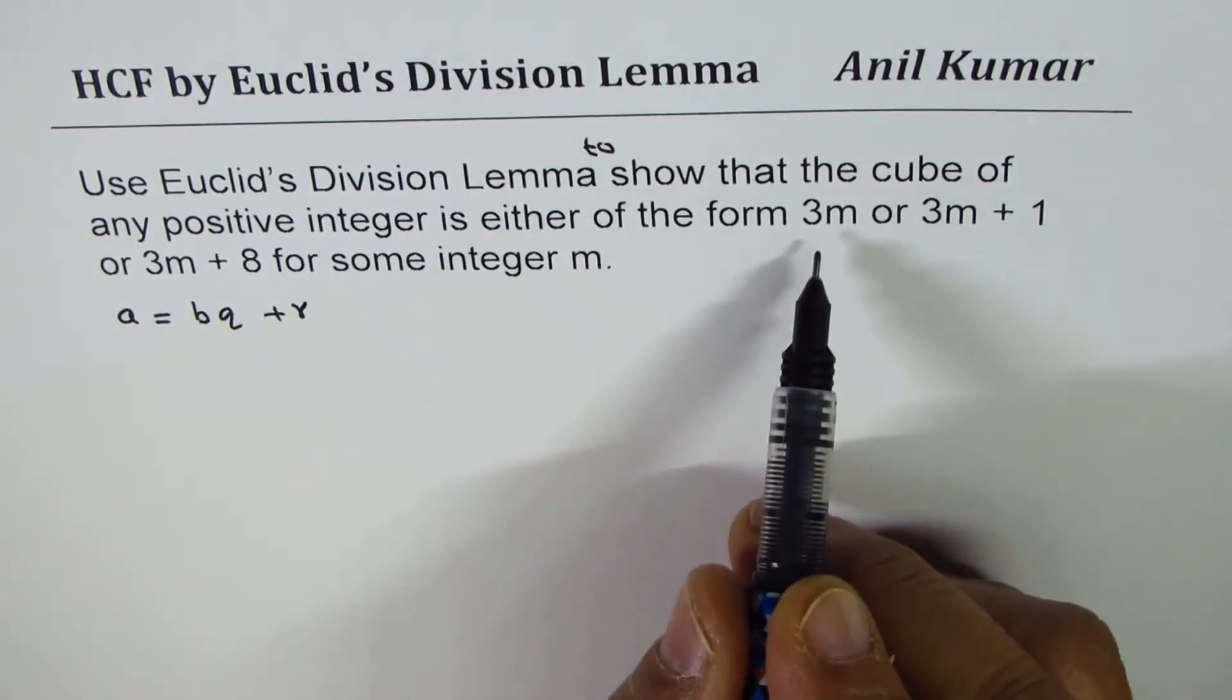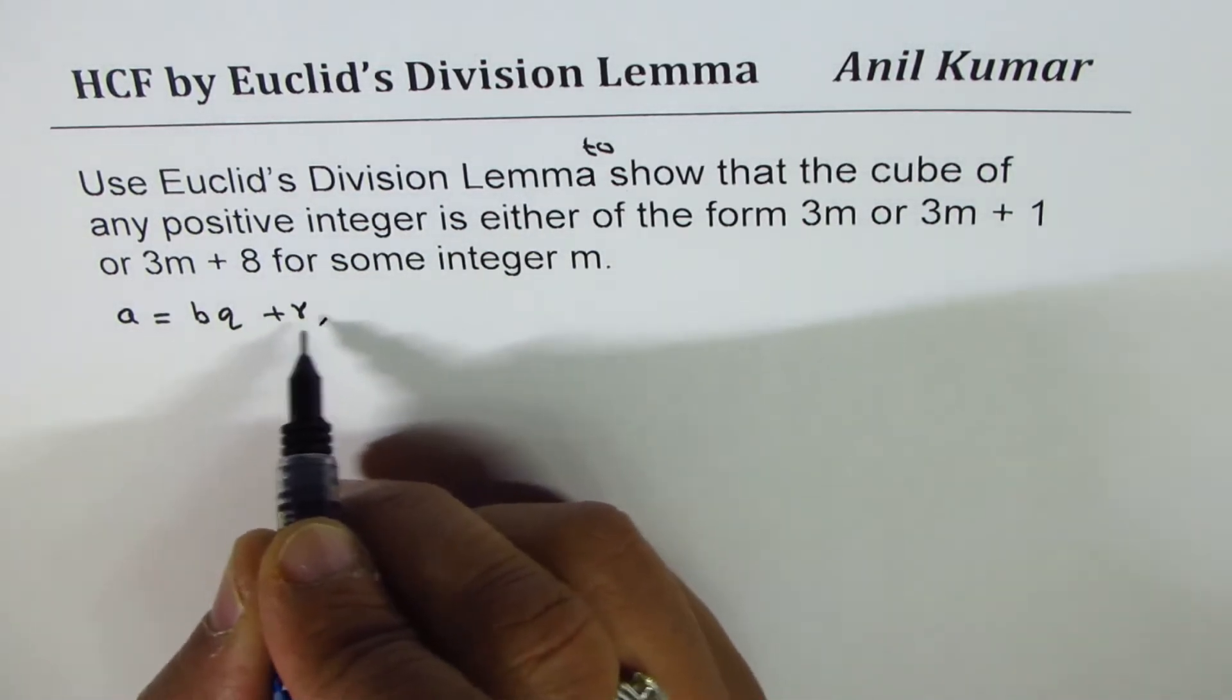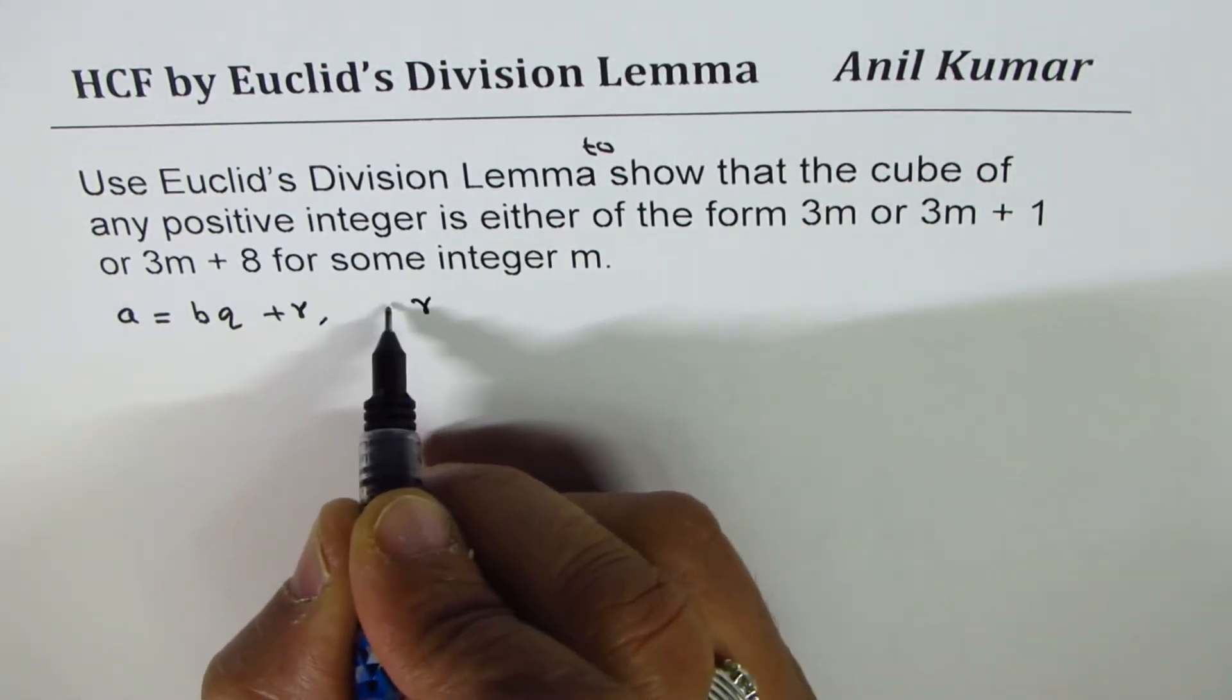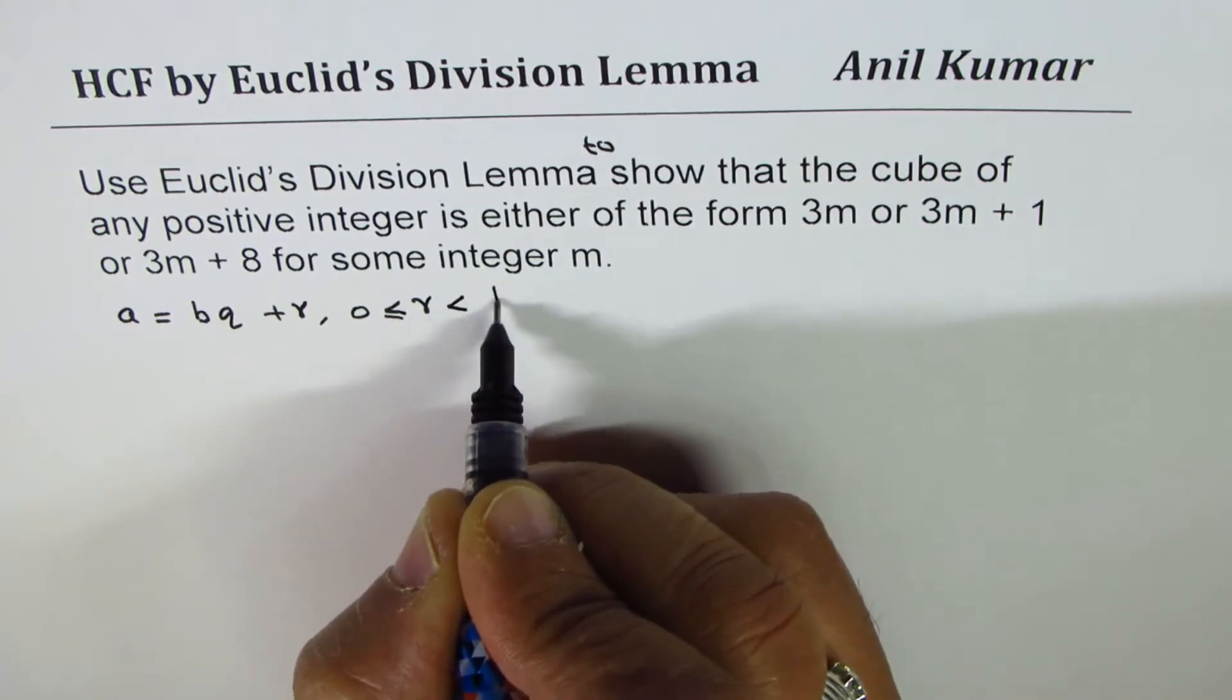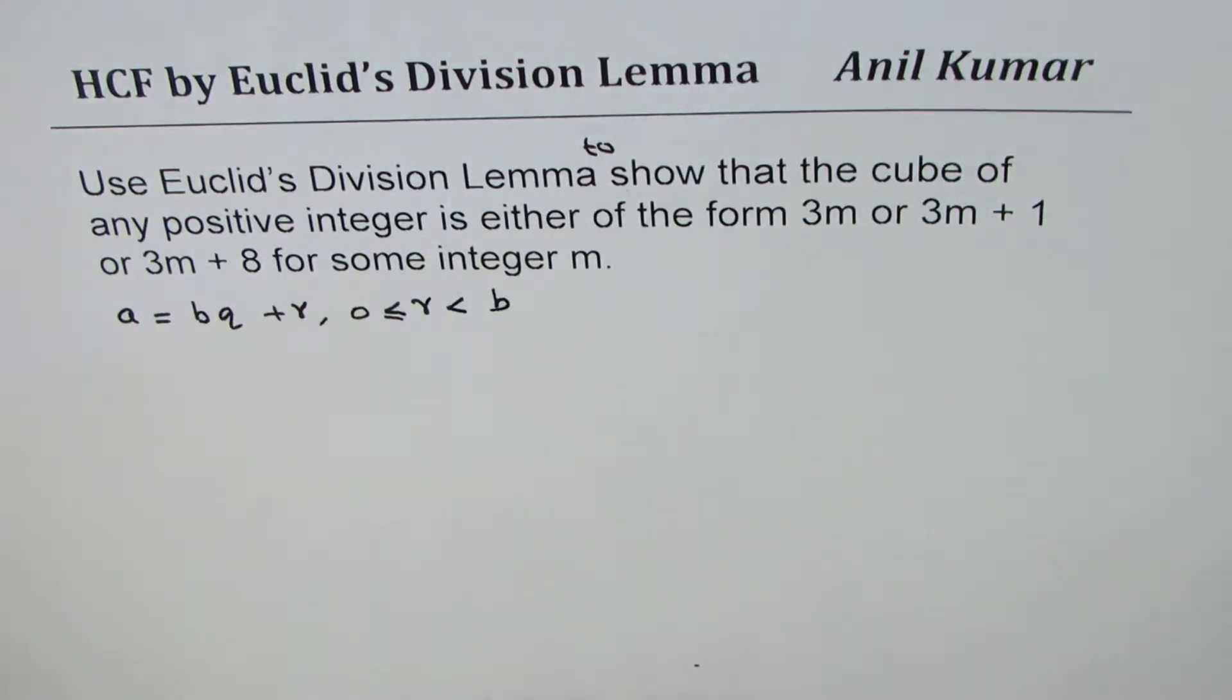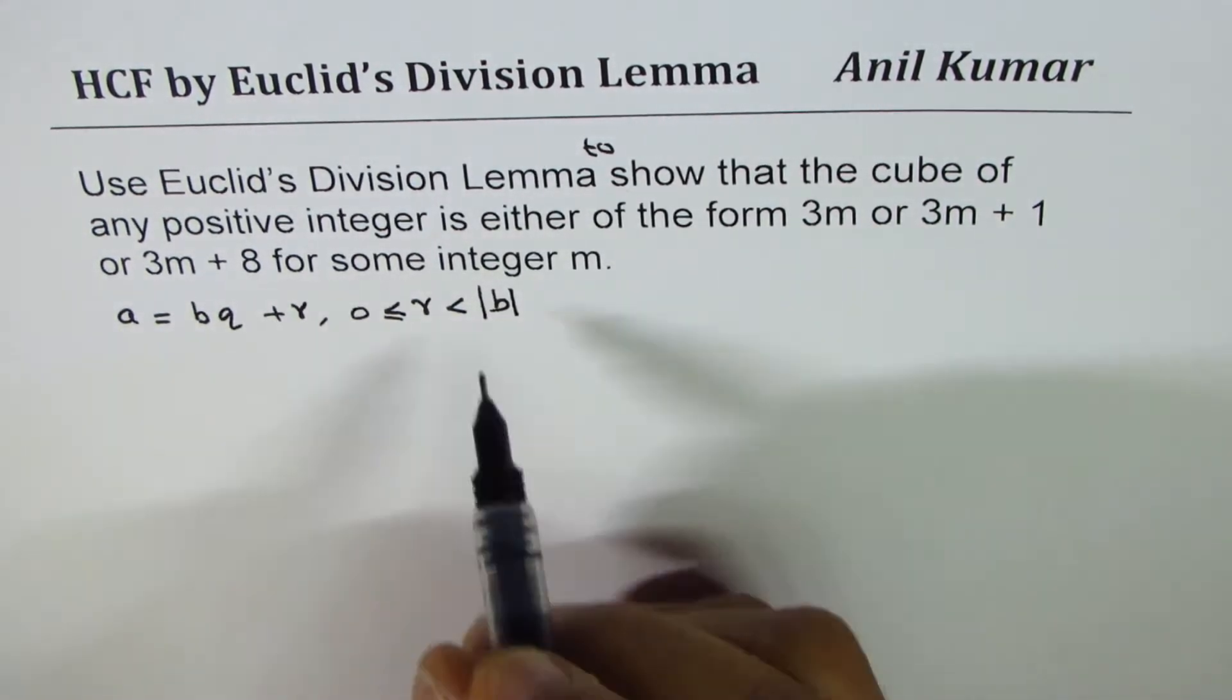Since we are interested in numbers like 3m, let me complete this. R is greater than or equal to 0 and less than B. At times, right, absolute value of B. It has to be positive.